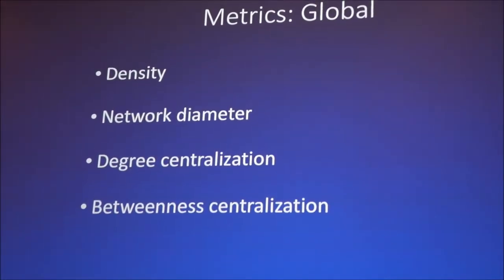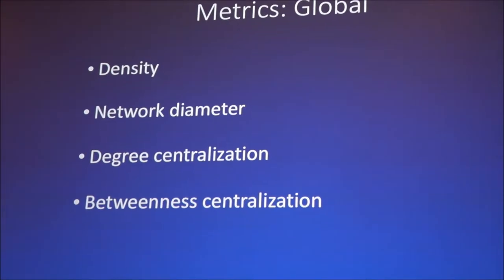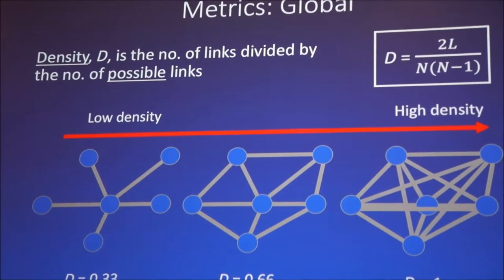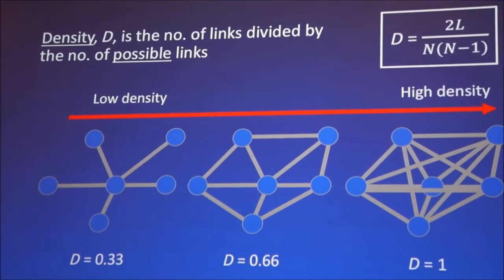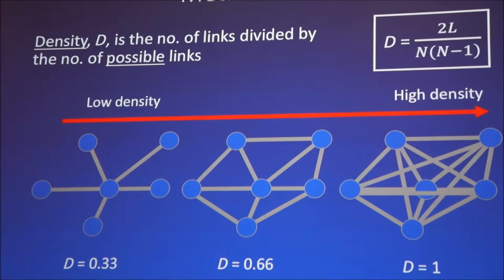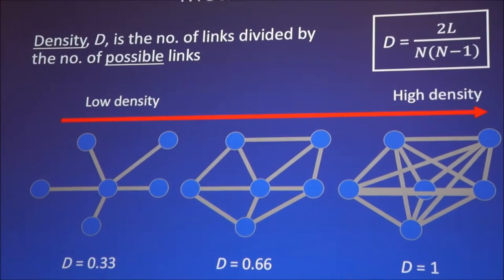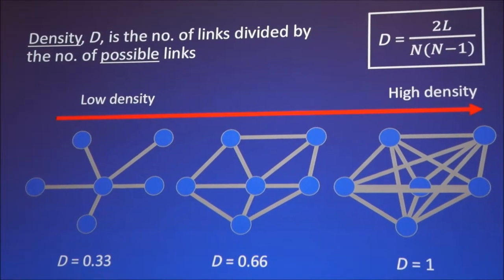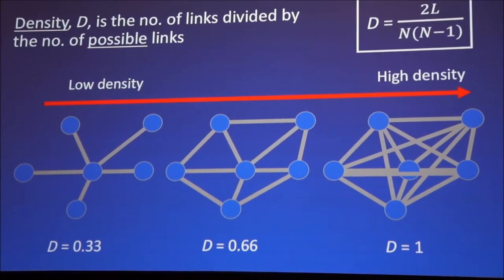So next, the global measures. I'm just going to talk about four here. There are a lot more, but we're just going to focus on four. First is the density, and that's essentially the number of links divided by the number of possible links. So it's the interconnectedness of a network. This is interesting in mineralogy because the more interconnected a network is, the more likely we're dealing with an equilibrium mineral assemblage. So you can see here as density increases, everything is more connected to each other.